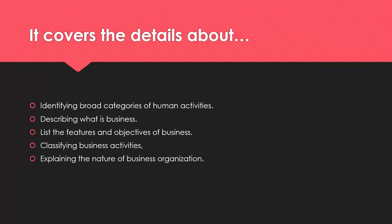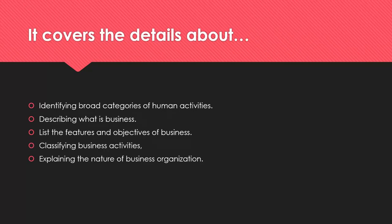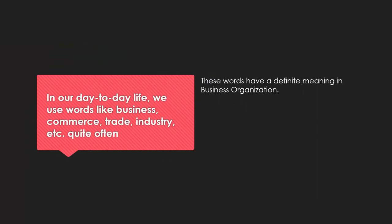The topic covers the details about identifying broad categories of human activities, describing what is business, listing the features and objectives of business, classifying business activities, and explaining the nature of business organization. In our day to day life, we use words like business, commerce, trade, industry, etc. quite often. These words have a definite meaning in business organization.